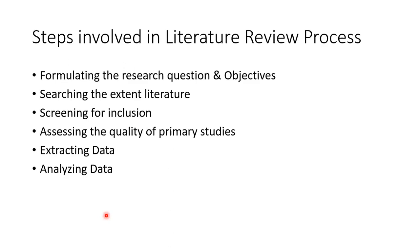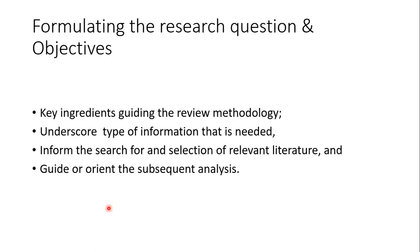The various steps involved in the literature review process are: first, you need to formulate the search question and write down the objectives. Second, you need to search the extent of literature that is available. Third, you need to screen for inclusion. Fourth, you need to assess the quality of studies. Fifth, you need to extract and analyze the data. We will be discussing all these aspects one by one in the coming slides.